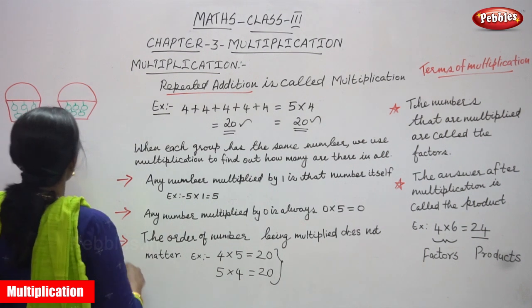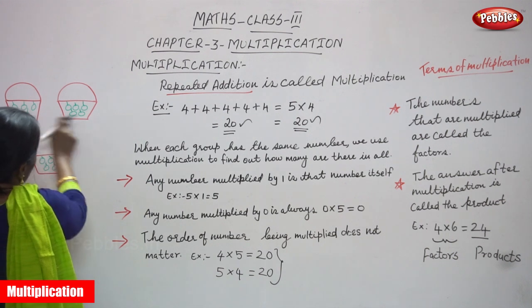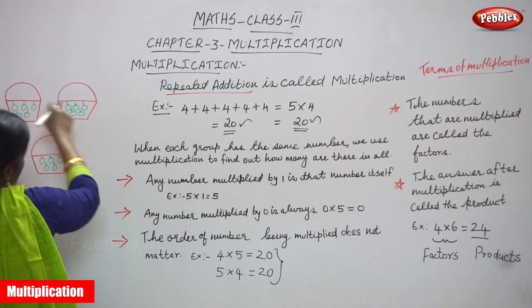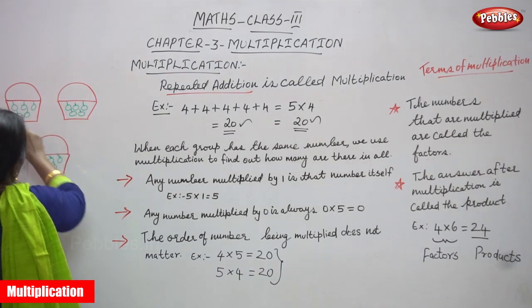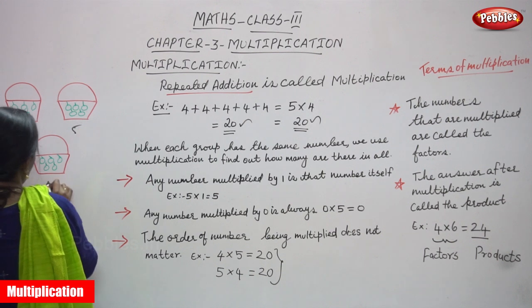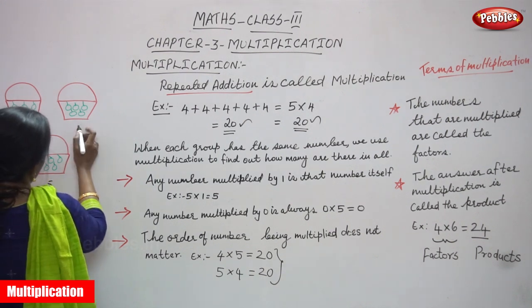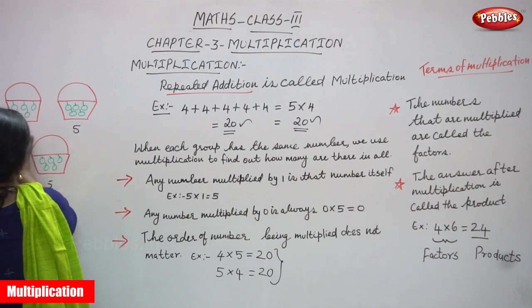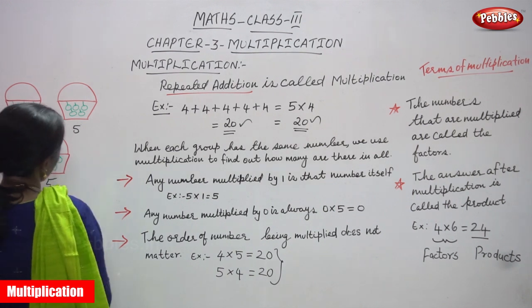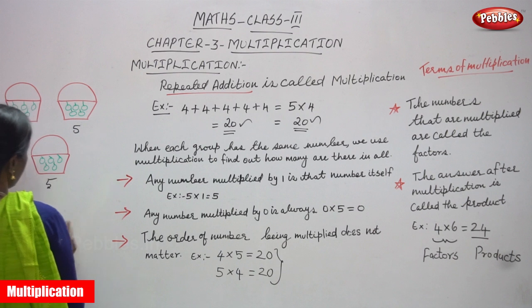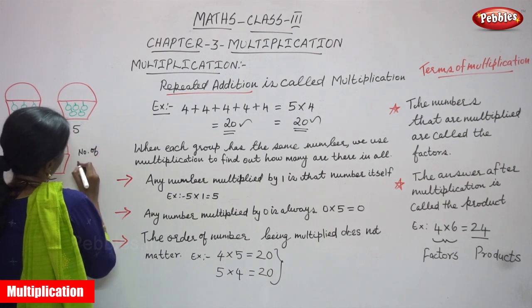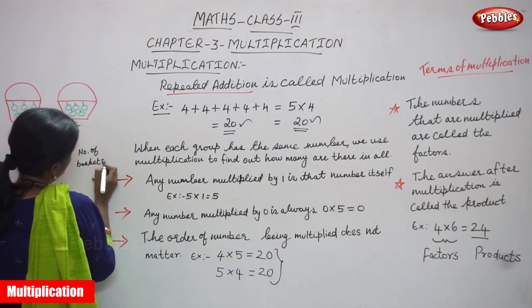For an example, look at this. This is a basket — how many baskets are there? There are 3 baskets. In each basket, how many brinjals are there? 1, 2, 3, 4, 5 — in each basket, 5 brinjals. So this is 5, this is 5, and this is 5. The number of baskets is 3.